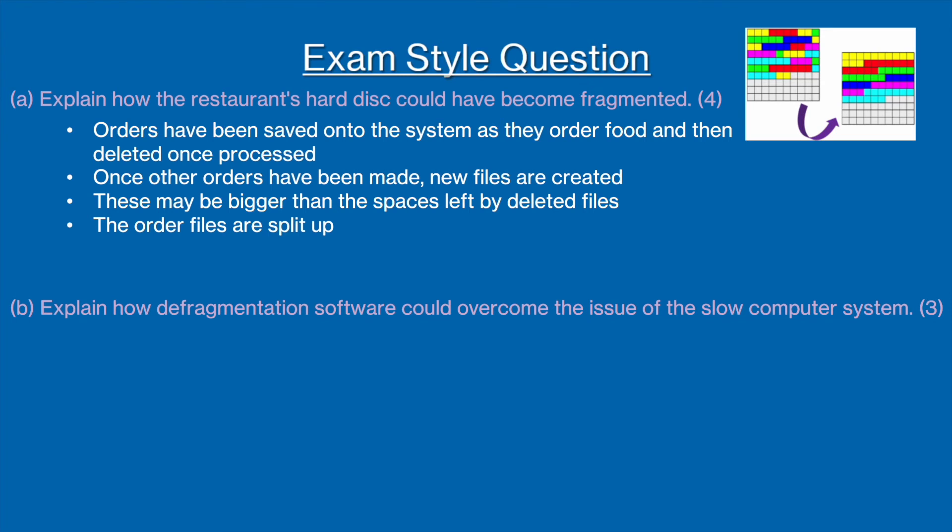Then, when new orders come through, they need to be fit into the spaces. If the spaces are not big enough for the files, the files have to be split up, causing the hard disk to become fragmented.